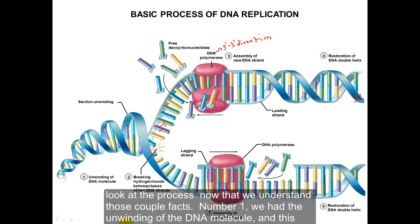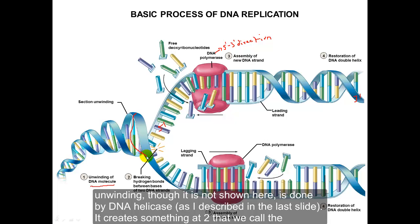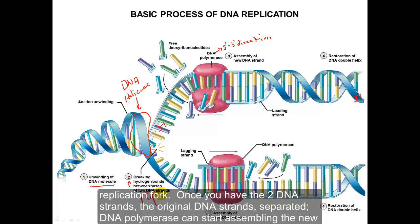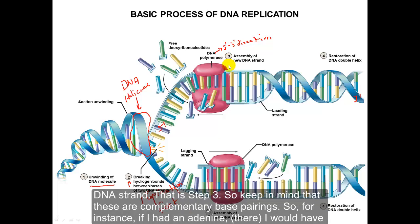Now let's look at the process. Step one: the unwinding of the DNA molecule. Although not shown here, this is done by DNA helicase as described previously. This creates what we call the replication fork. Once the two original DNA strands are separated, DNA polymerase can start assembling the new DNA strand — that is step three.